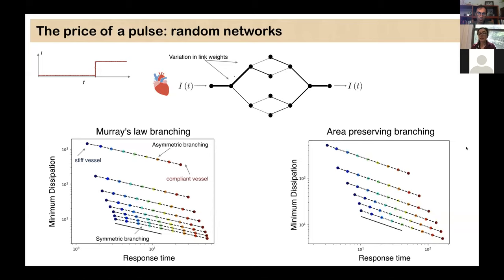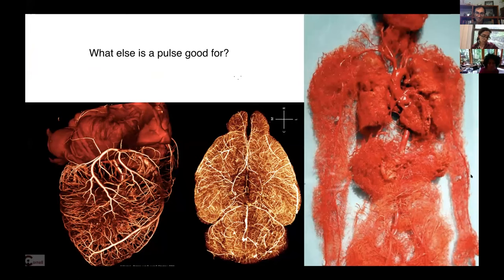But the take-home message remains, there is a price to have a pulse. Yes, the price is that you have to pay more dissipation to maintain the flow through the system. But with that cost, with that dissipation cost, you buy something. And what you buy is high response times. So I want to finish my talk, my last one minute or two, discussing what else is a pulse good for? Now you're going to say, well, you just told us a pulse is an inevitability of having a pulsatile pump, a heart. And it's also good because if you kill it completely with elastic vessels, you don't have a high response time.